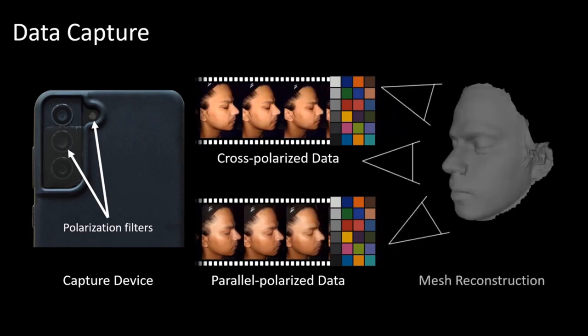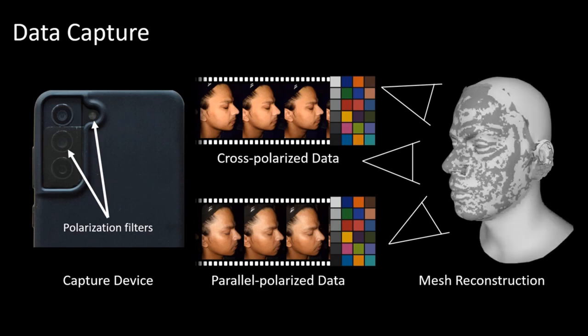Using structure from motion, we estimate the coarse geometry of the subject, to which we then non-rigidly fit the flame-face model. Based on this data, and leveraging the fact that the light source is co-located with the camera, we optimize high-resolution diffuse, specular, and normal maps.